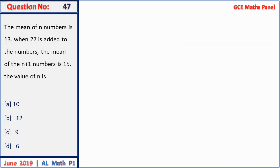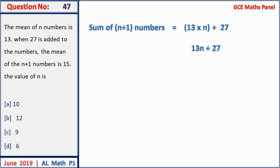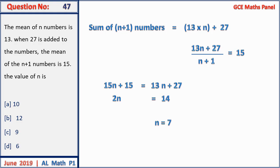Question 47: the mean of n numbers is 13. When 27 is added the mean of (n+1) numbers is 15. The total of n numbers is 13n; adding 27: (13n + 27)/(n + 1) = 15. Multiplying out: 15n + 15 = 13n + 27, giving 2n = 12 and n = 6. Answer C.